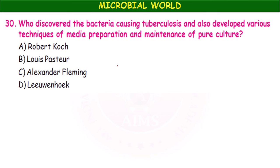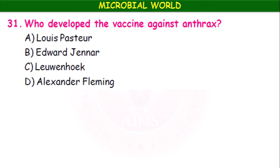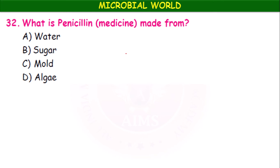Who discovered bacteria causing tuberculosis and developed techniques of media preparation and maintenance of pure culture? Robert Koch. Who developed the vaccine against anthrax? It is Louis Pasteur — Louis Pasteur developed the vaccine against anthrax. Edward Jenner developed the smallpox vaccine. What is penicillin medicine made from? Mold — penicillin is extracted from the Penicillium fungus.